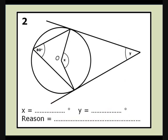Question 2. Ignoring the tangents for a second, we have our arrowhead, where x at the centre is double the angle at the circumference. So x is 160 degrees.